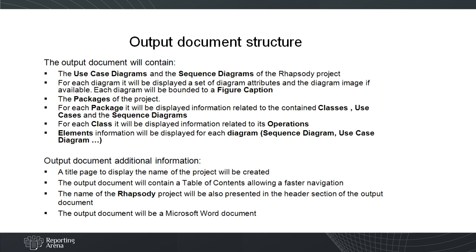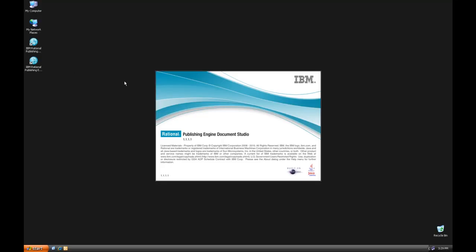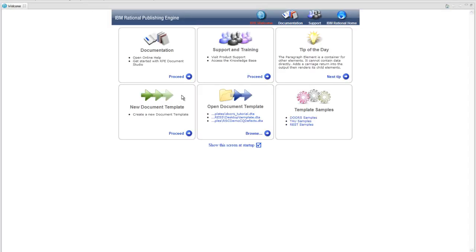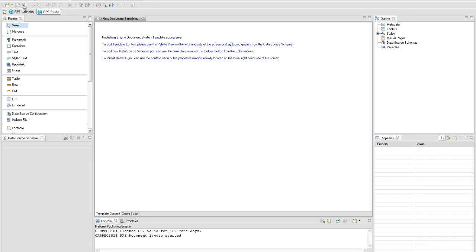Elements information will be displayed for each extracted diagram. A master page will be created and in the header we will display the name of the Rhapsody project from where the data will be extracted. The template will contain some additional structures like table of contents and table of figures, and it will have a title page section. We will use Rational Publishing Engine and create a template to extract the elements of interest from the Rhapsody loaded project.